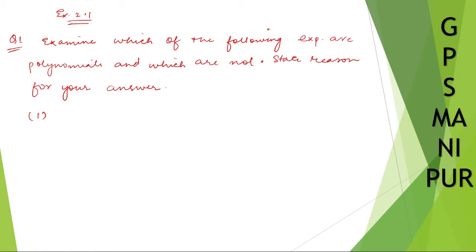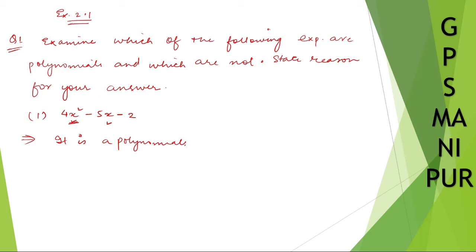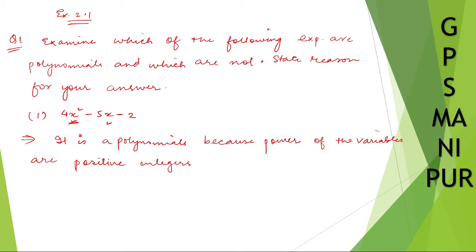Roman number one: we are going to check whether these are polynomials or not. Roman number one is 4x squared minus 5x minus 2. This is a polynomial because the power of the variables — like x here — are positive integers. They are not negative, so this is a polynomial because the powers of the variables are positive integers.